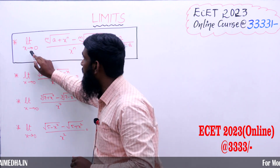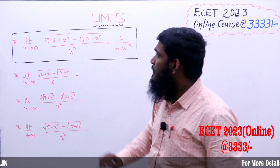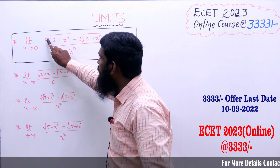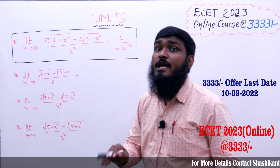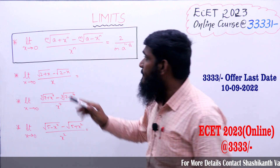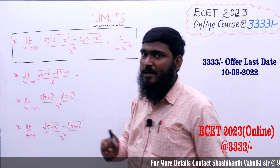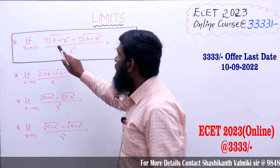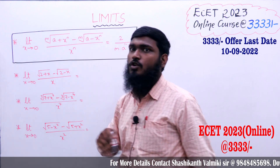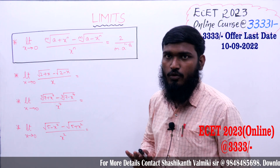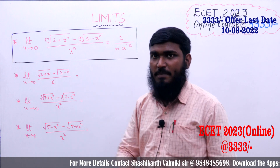First, the limit should be x tends to 0. Next, the roots must be the same — both terms must have the mth root. If one term has a square root, the other must also have a square root; if it is a cube root, both parts must have a cube root. So the roots must be the same.